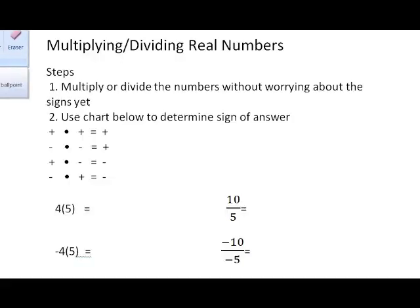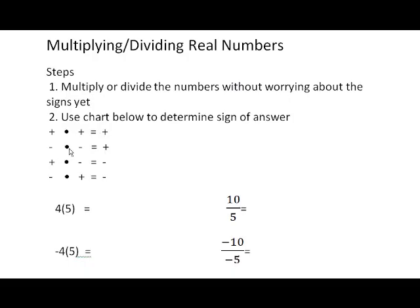This video is on multiplying and dividing real numbers. Real numbers are pretty much any number you find on a number line — numbers with signs, positive or negative. The steps are: step one, just multiply or divide the numbers without worrying about the signs yet; step two, use a chart to determine the sign of your answer.